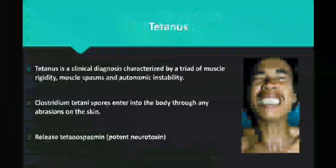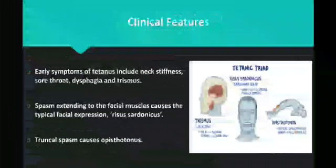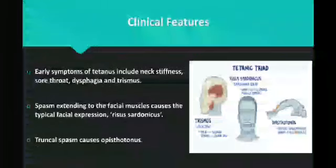Tetanus is a clinical diagnosis characterized by a triad of muscle rigidity, muscle spasm, and autonomic instability. Clostridium tetani spores enter the bloodstream via abrasive skin lesions and release a neurotoxin called tetanospasmin. Early symptoms include neck stiffness, sore throat, dysphagia, and trismus. Spasm extending to the muscles of facial expression is called risus sardonicus. Truncal spasm causes opisthotonus, which means full body muscle spasm.